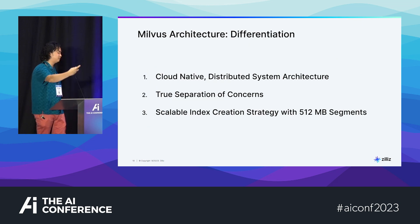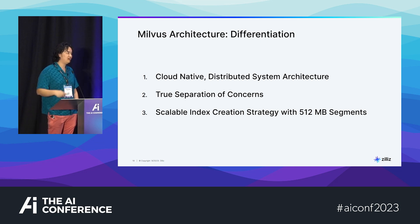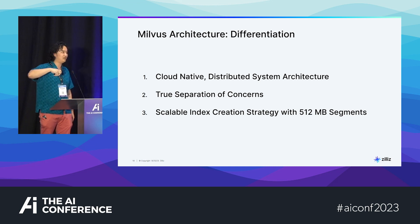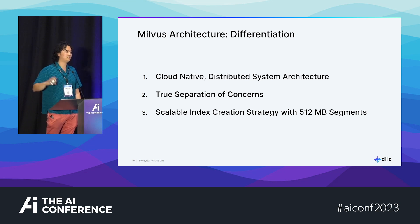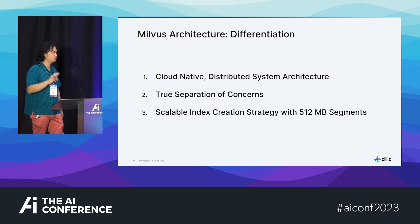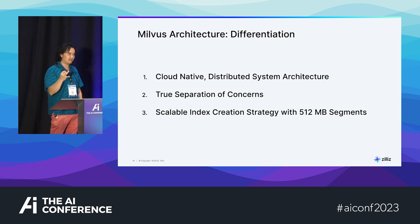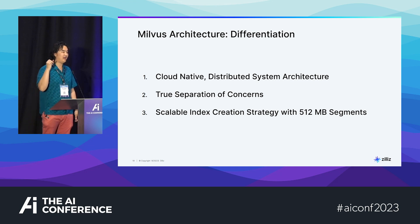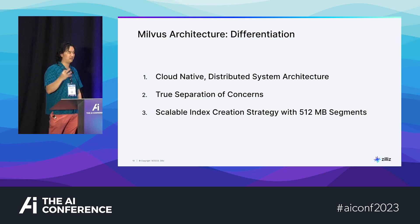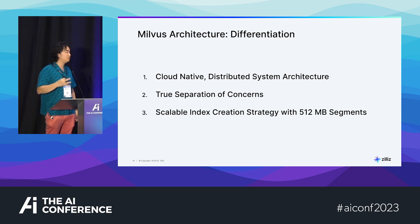What makes Milvus scalable and different? Essentially we have a cloud-native distributed system architecture. We had a V1 and saw that scaling was difficult because we didn't initially put it onto a cloud-native structure with Kubernetes pods. We've since made that architecture change. There's also a true separation of concerns: indexing, storage, and querying. Milvus has a separate node for each of these concerns, which allows you to effectively scale with lower costs, since you only need to scale up one node at a time.